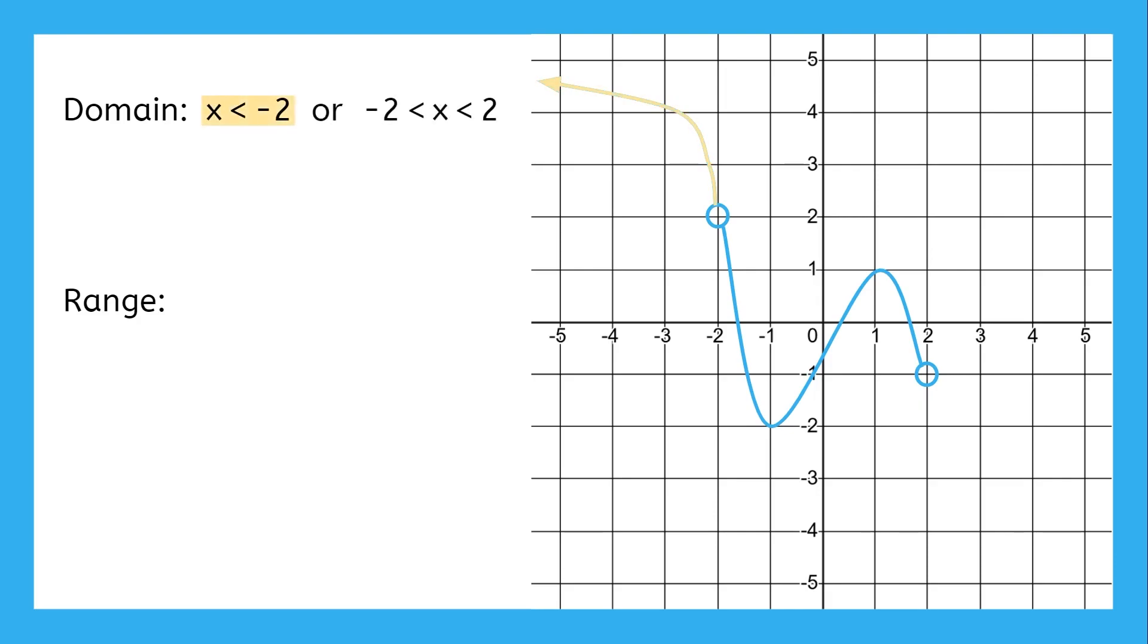Here's the domain for this function. It includes all values to the left of negative two, but there is not a point at exactly negative two. So the inequality does not include or equal to. But that's not all of the inputs. There are also inputs in this area. This section passes through every input between negative two and two, but those values themselves are empty. So again, we're going to use strict inequalities rather than or equal to.